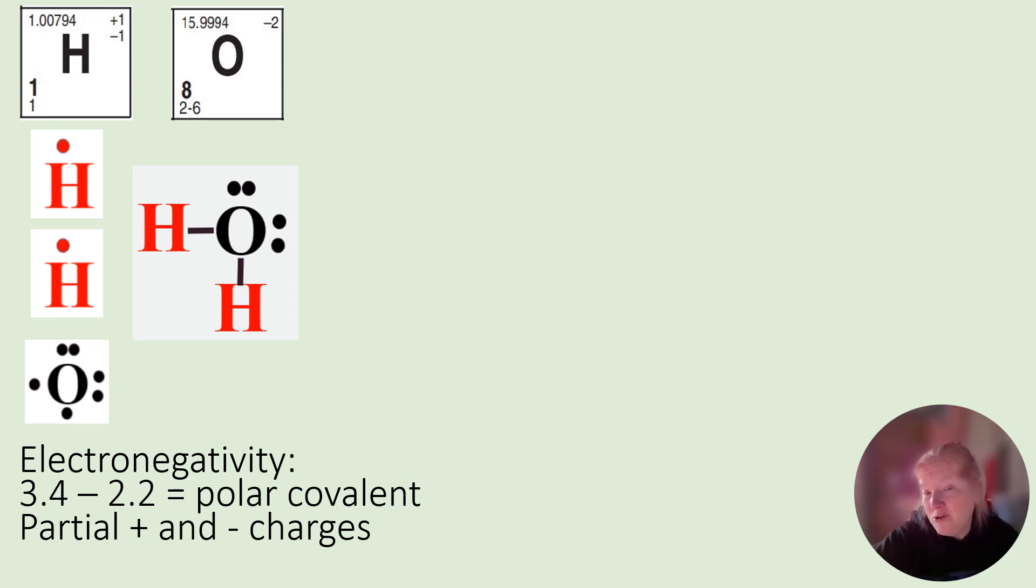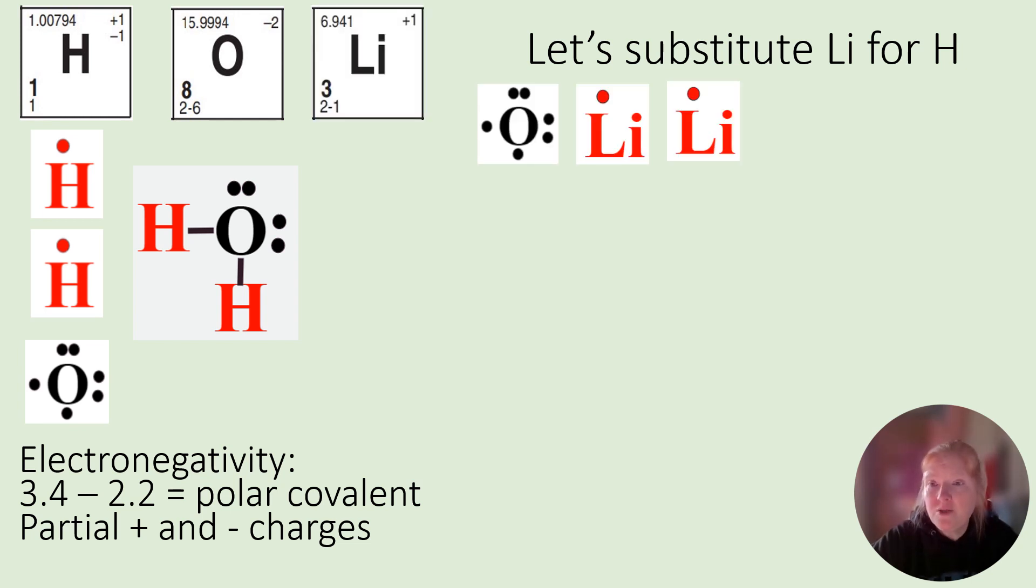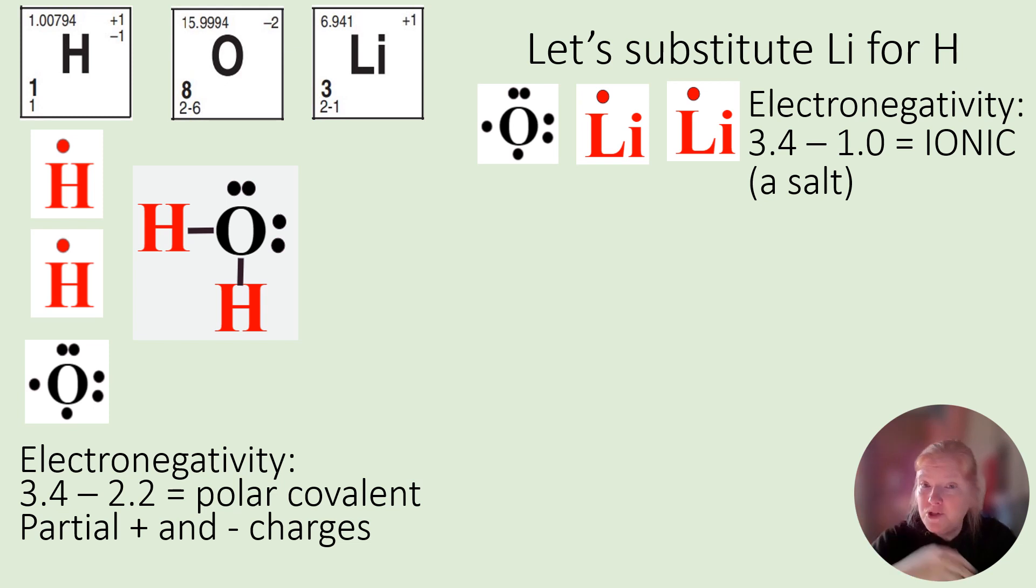So now here's water again, but this time we're going to substitute Li for H. So there's Li. So instead of the two H's, we're going to put two Li. Now the electronegativity difference - whew, it's a big one, 2.4. Oh my goodness. That's ionic. It's a salt.